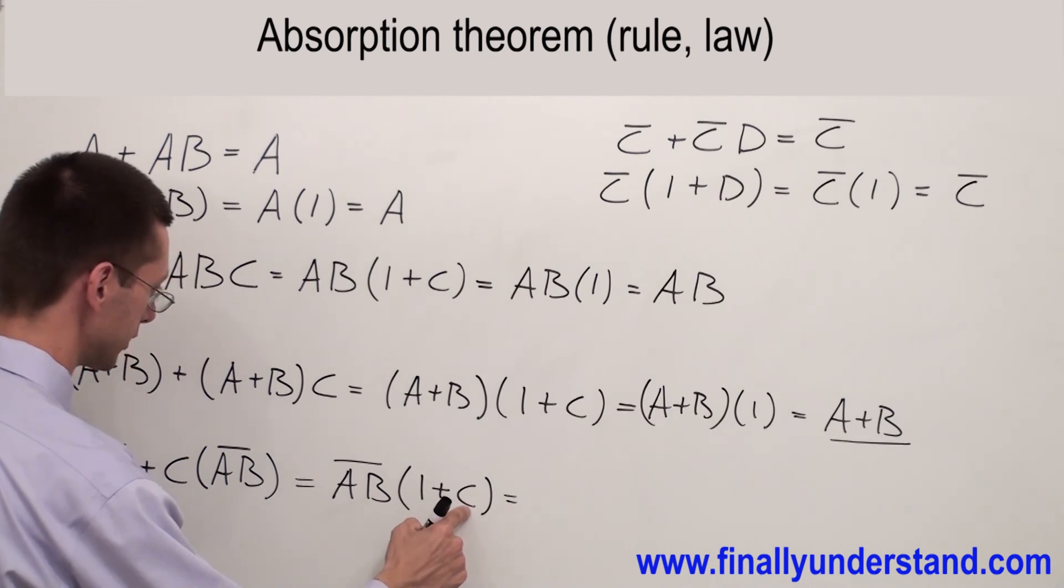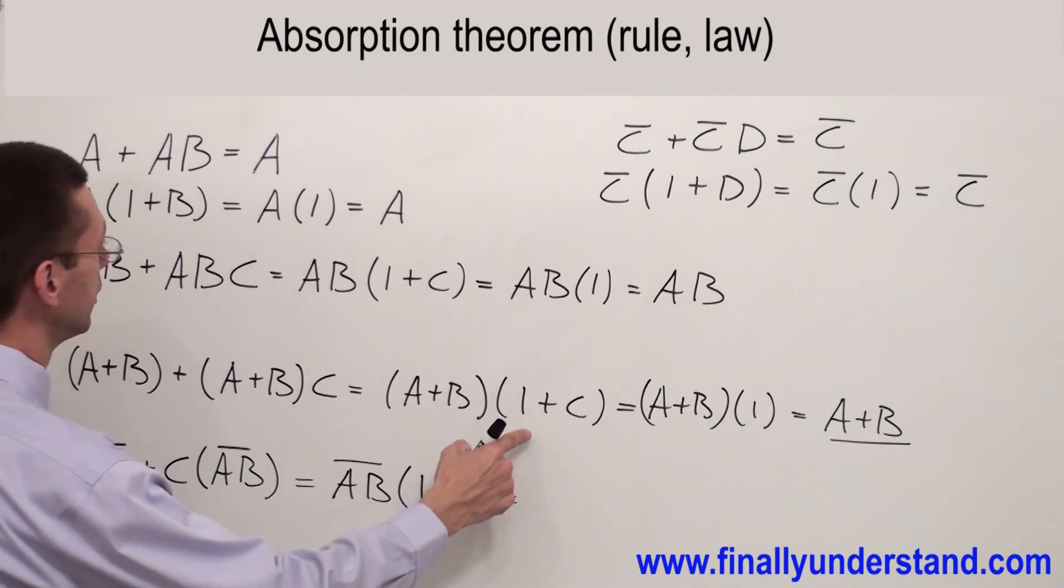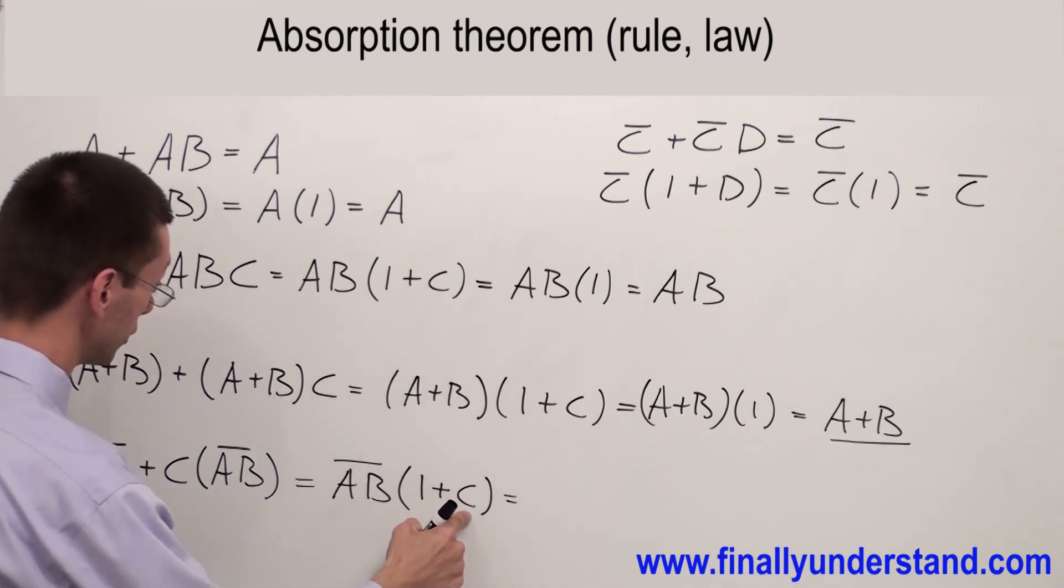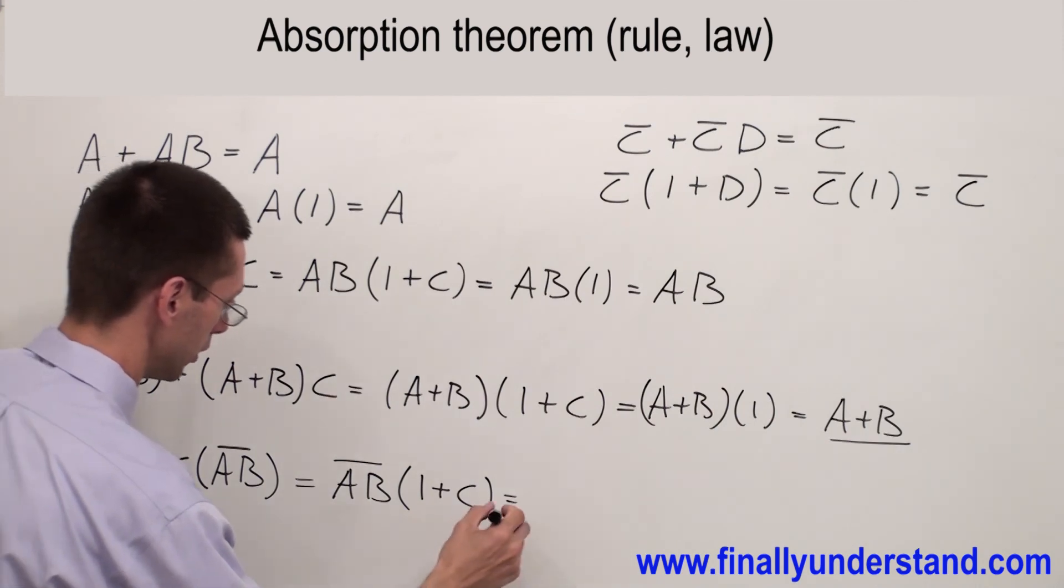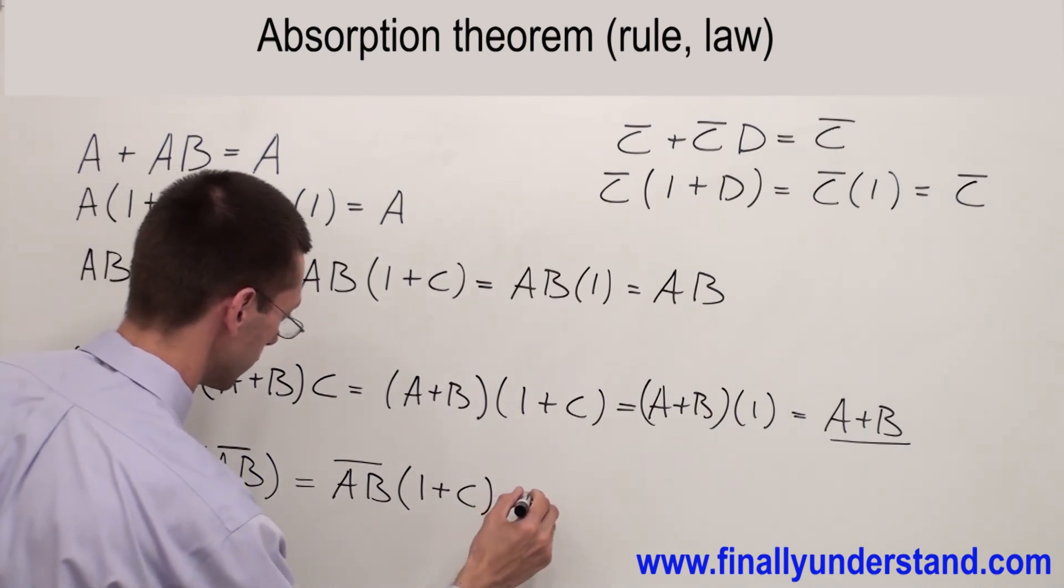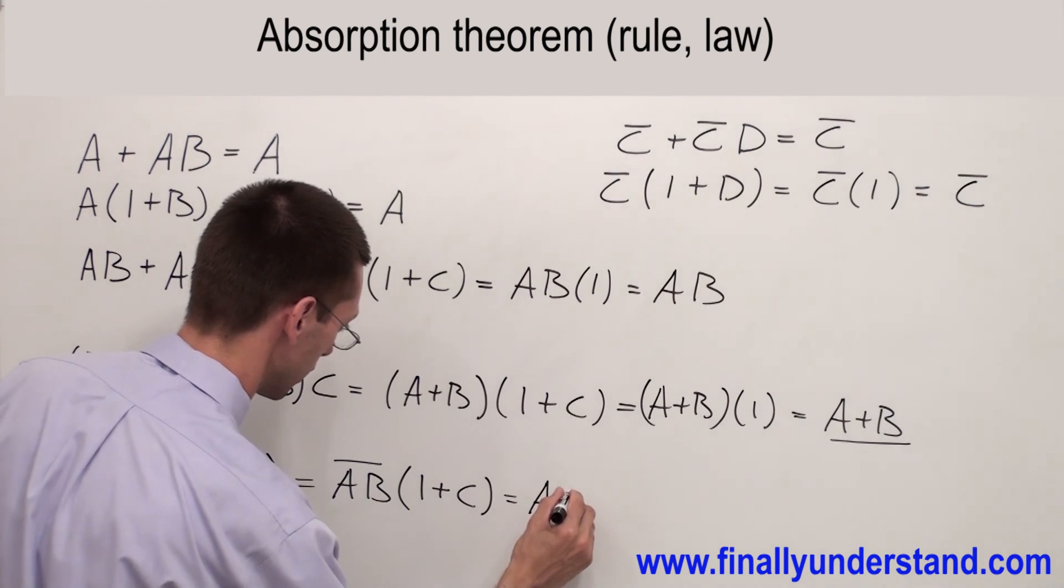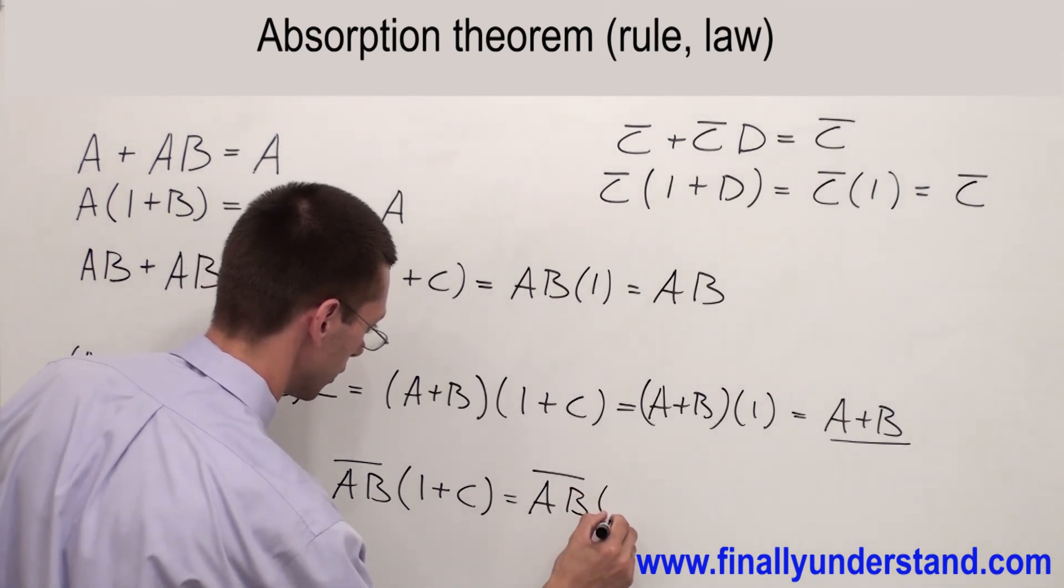1 OR anything, in this case we have C, but it could be any variable. It's always equal 1. That's why my answer is AB NOT times 1.